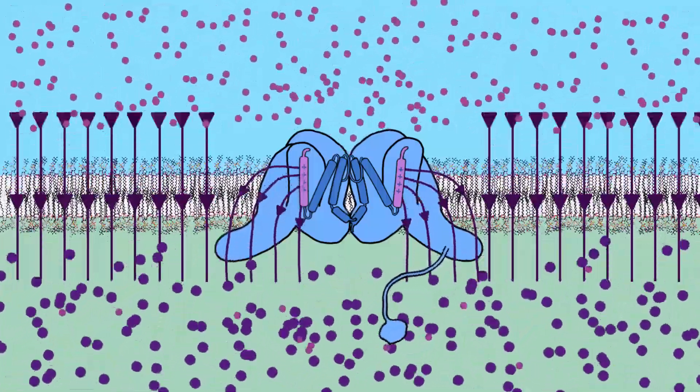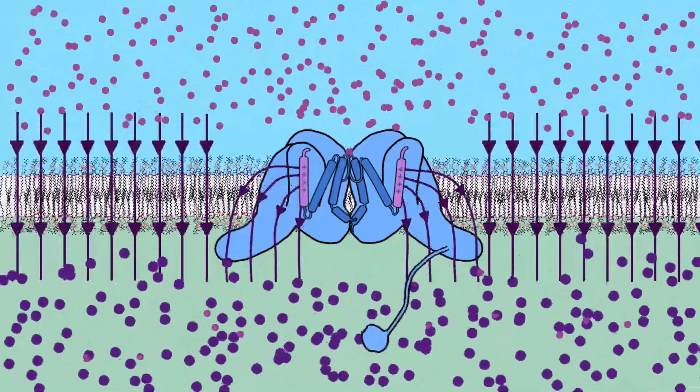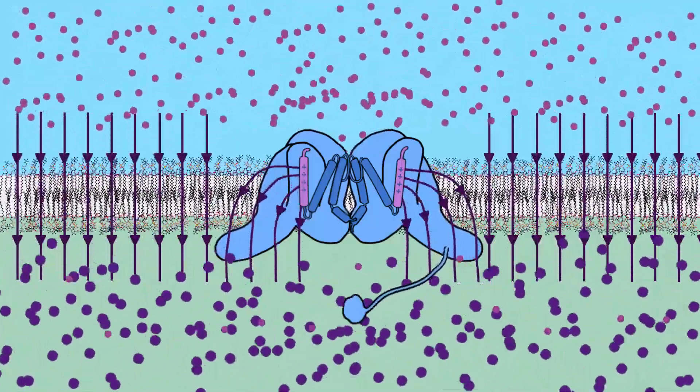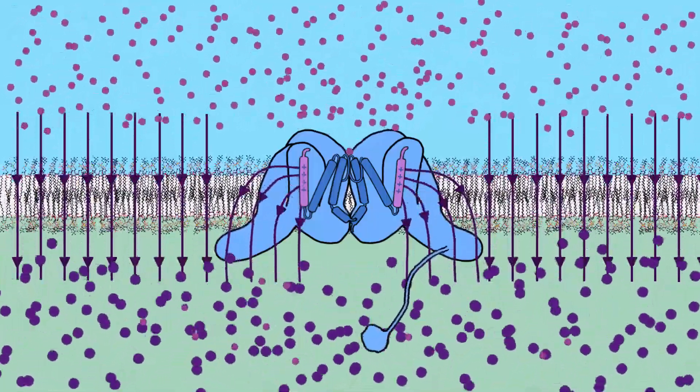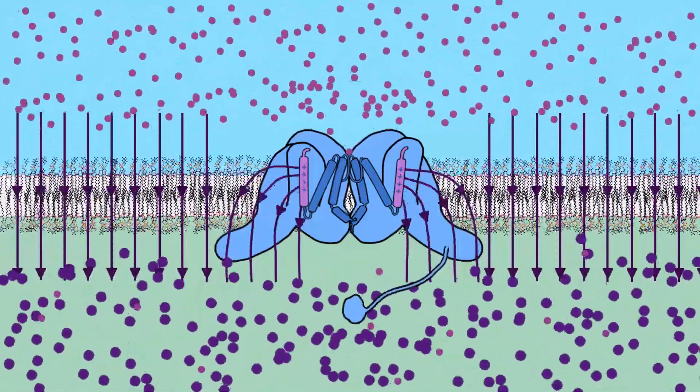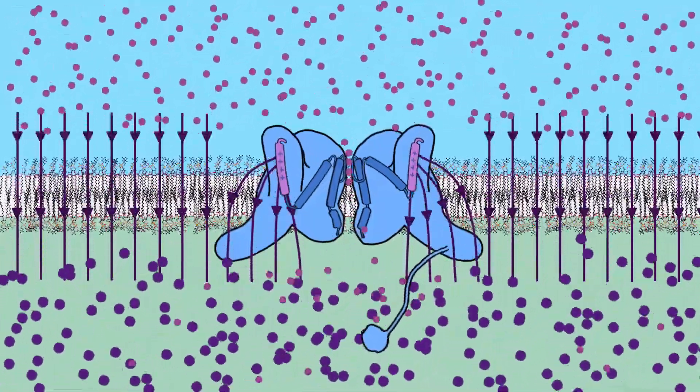But when the voltage inside the membrane loses negative force, rising to more than minus 50 millivolts, the positive segments are no longer attracted with enough force and rise, opening a narrow pore for sodium ions to pass through.